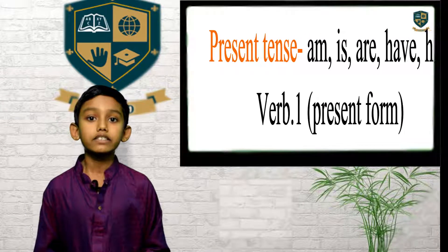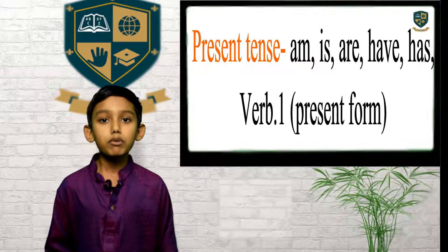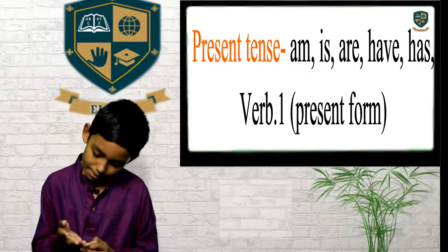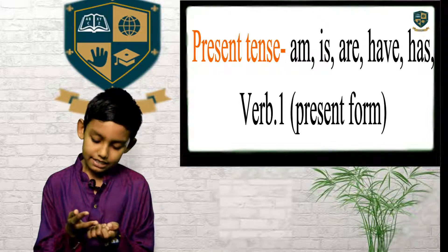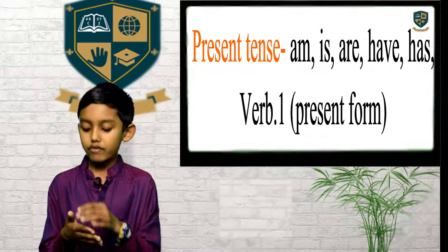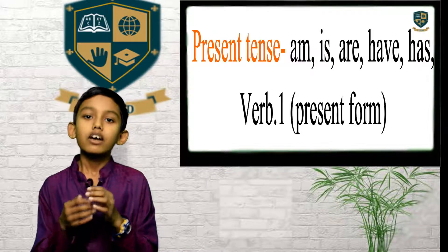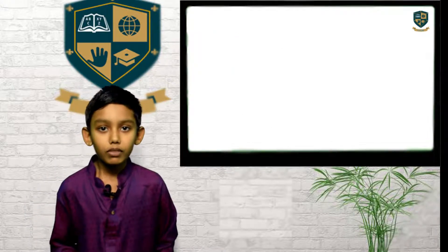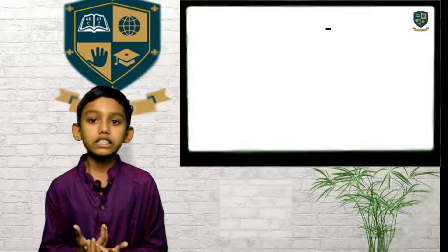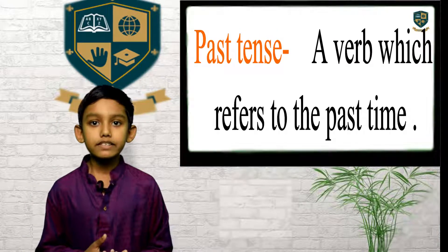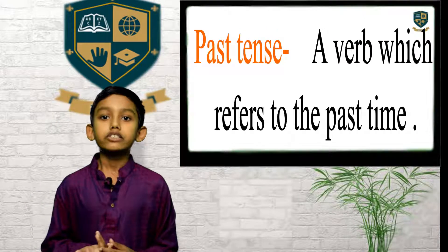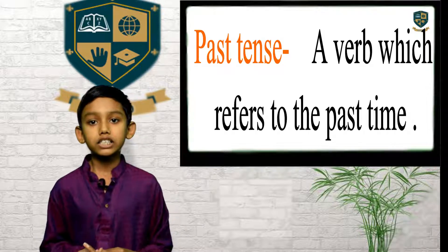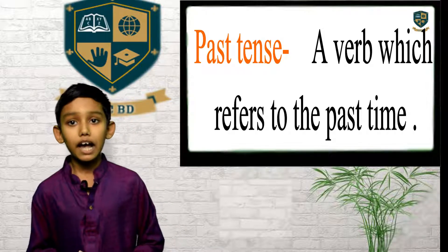Present tense symbols are am, is, are, have, has, were, want. Past tense means a verb which refers to the past time.